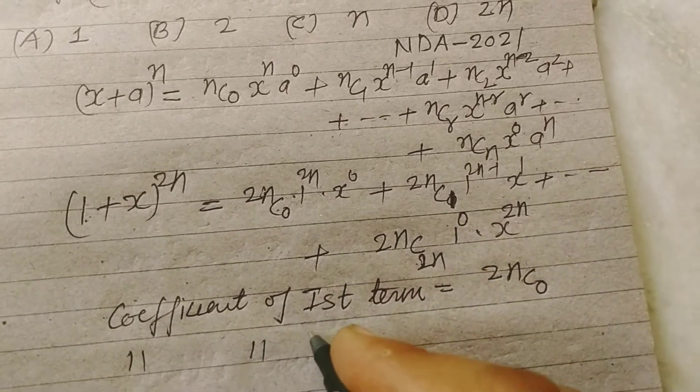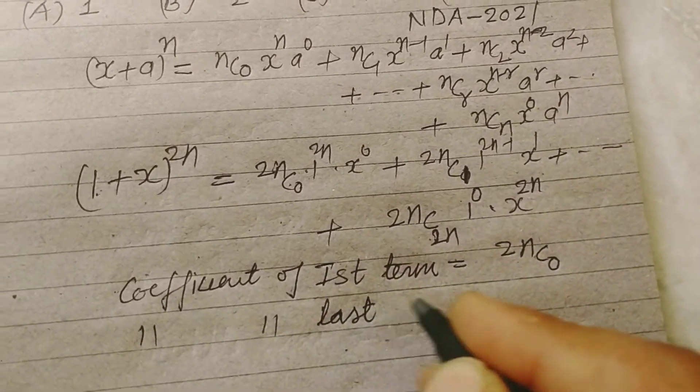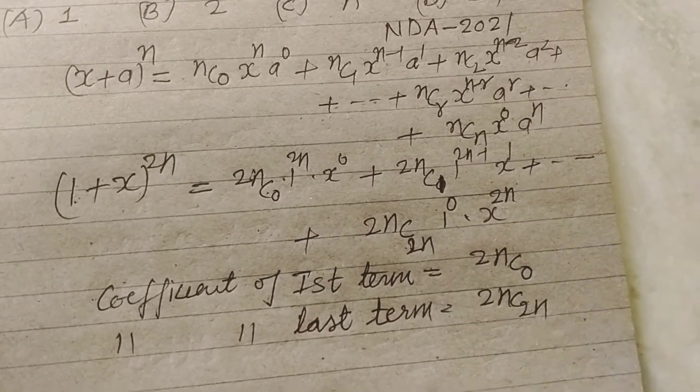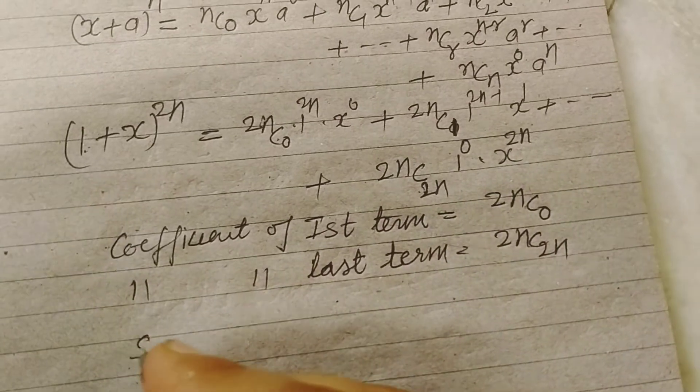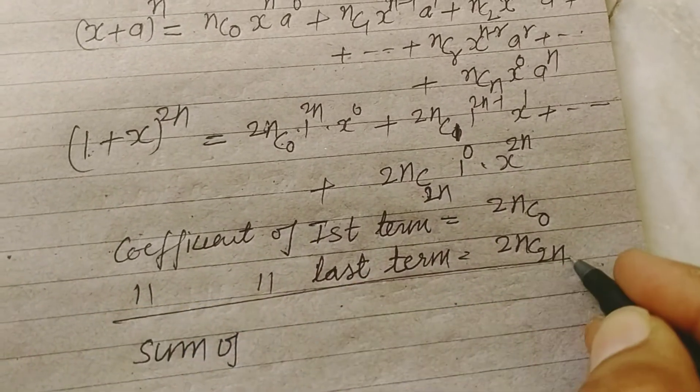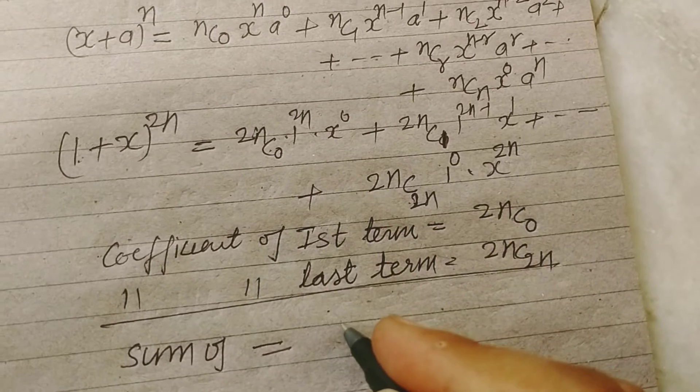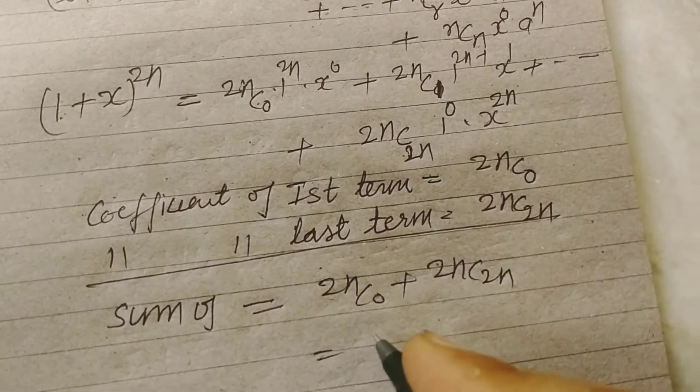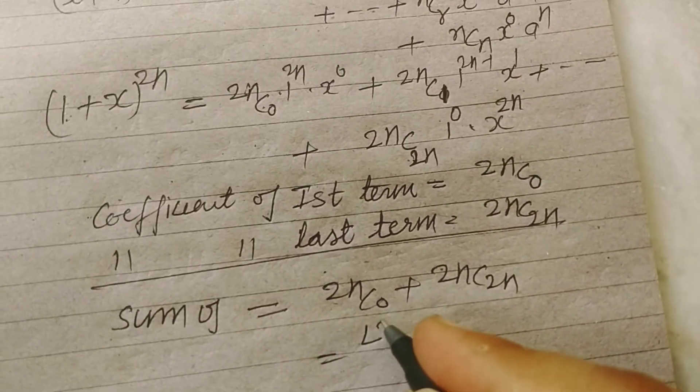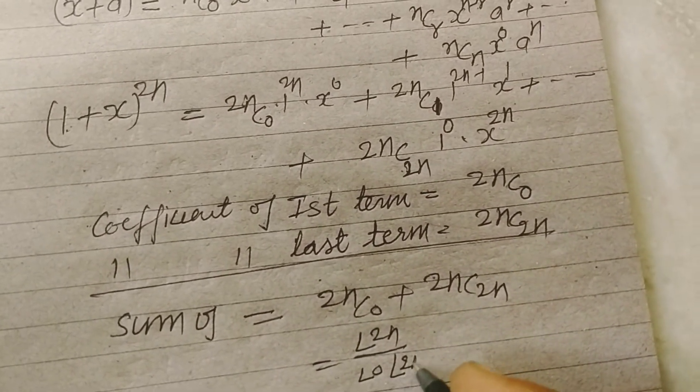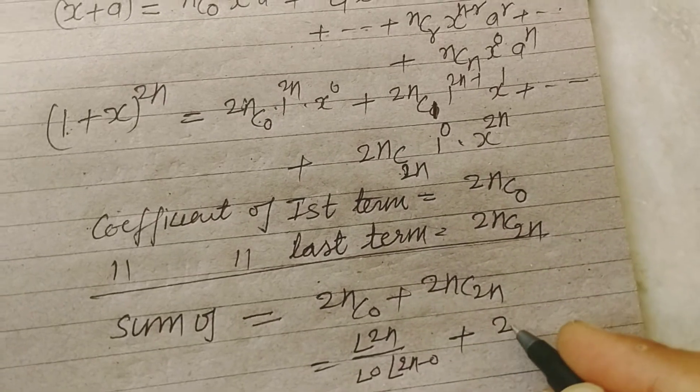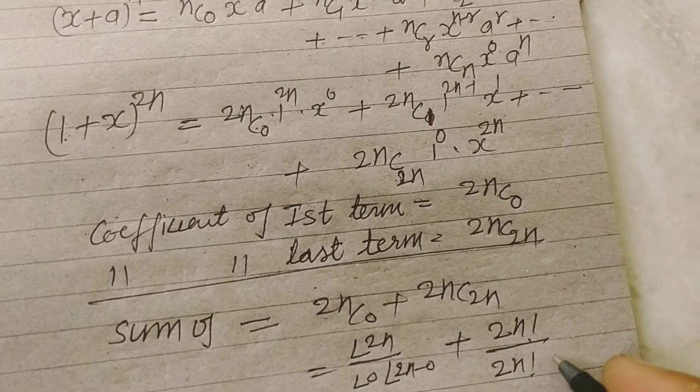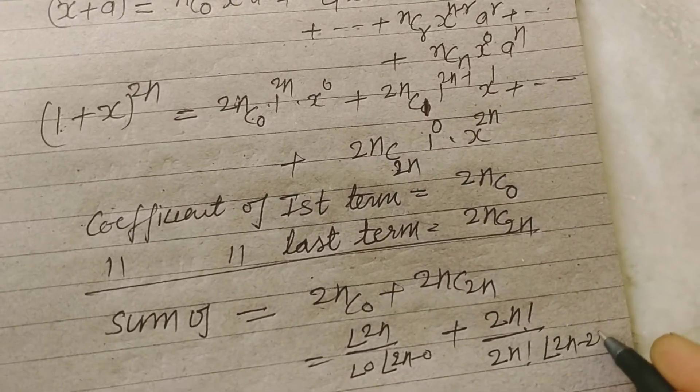And sum of these is 2nC0 plus 2nC2n, and 2nC0 is factorial 2n upon factorial 0, factorial 2n minus 0, plus factorial 2n upon factorial 2n factorial 2n minus 2n.